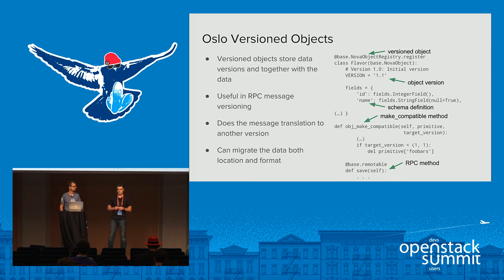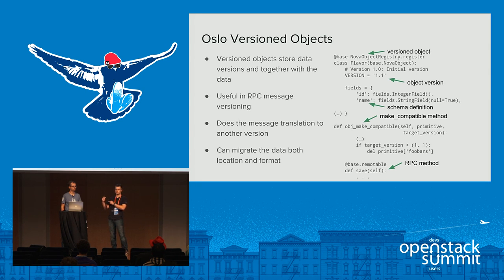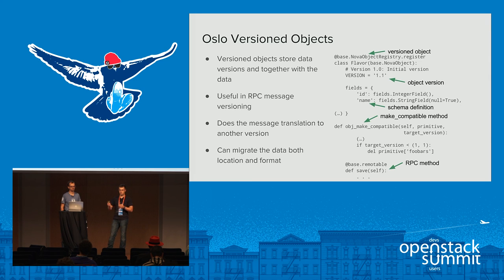What's great about versioned objects is they have a translation method to convert to another version. When you upgrade your server to a newer version while the agent stays on an older version, and you've changed the protocol between agent and server, you can translate the newer format on the server side and send it back to the agent in a format it understands. Versioned objects also support migrating data between one format and another — from one column to another place to store the information.